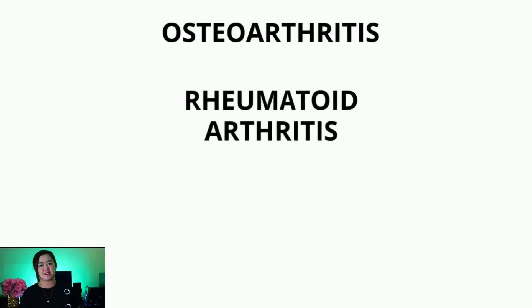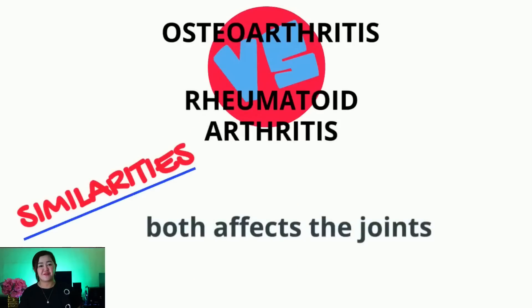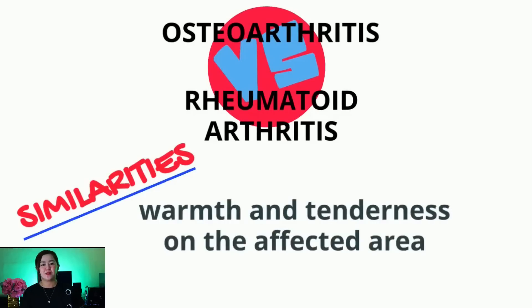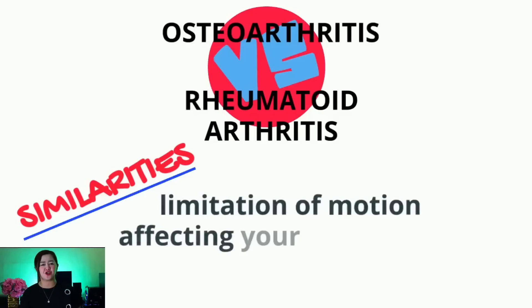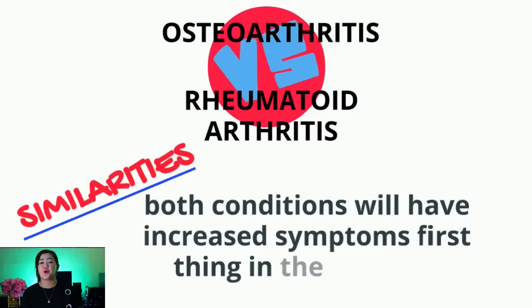There are five symptoms that are said to be similar and can be found in both osteo and rheumatoid arthritis. They can both affect your joints. You may feel stiffness and pain in your affected joints. You can feel warmth and tenderness in your affected area. You will manifest with limitation of motion that would make it difficult for you to move around doing activities in your household, in your workplace, and even in your communities. And lastly, in both conditions, you can surely feel increase of your symptoms first thing in the morning.